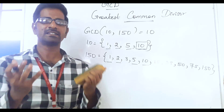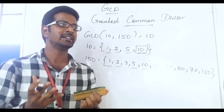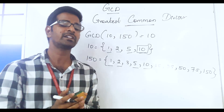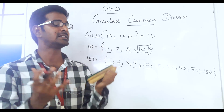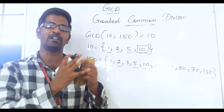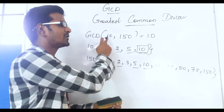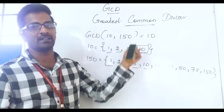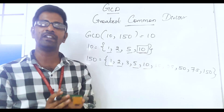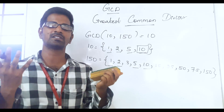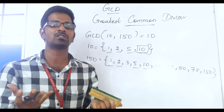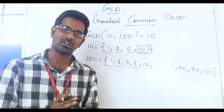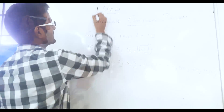If the number is a small number, it is easy to calculate the greatest common divisor. But what if the number is a big number? For example, GCD of 234,856 and 85,211 — we need some shortcuts in order to solve this. And the shortcut is Euclid's algorithm.